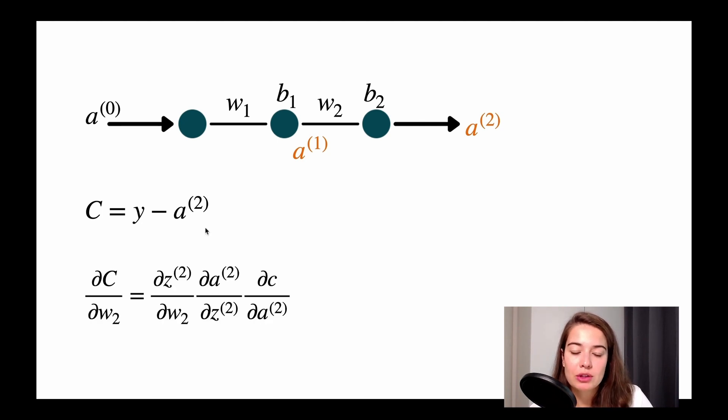Well, to do that, we learned that we use something called the chain rule. The chain rule tells us that if I want to know how weight 2 affects the cost, I need to know everything that is in between. So I also need to know how the output of the first layer affects the output, how the output of the second layer affects the output, and so on and so forth.